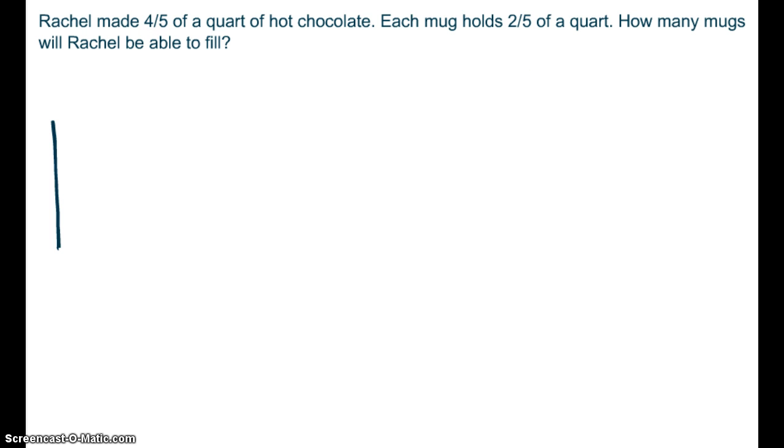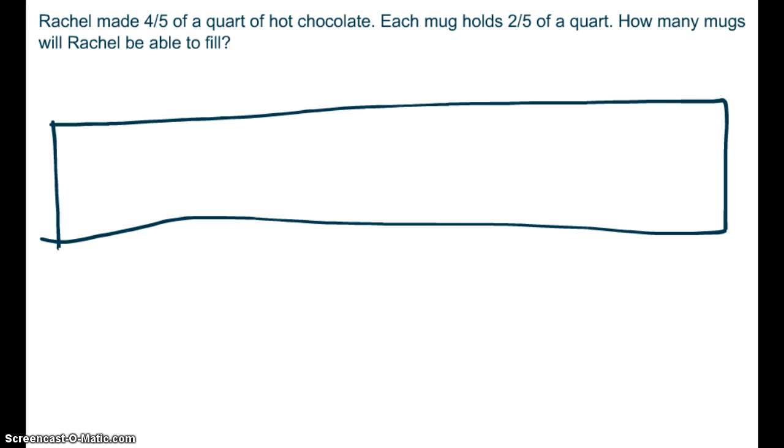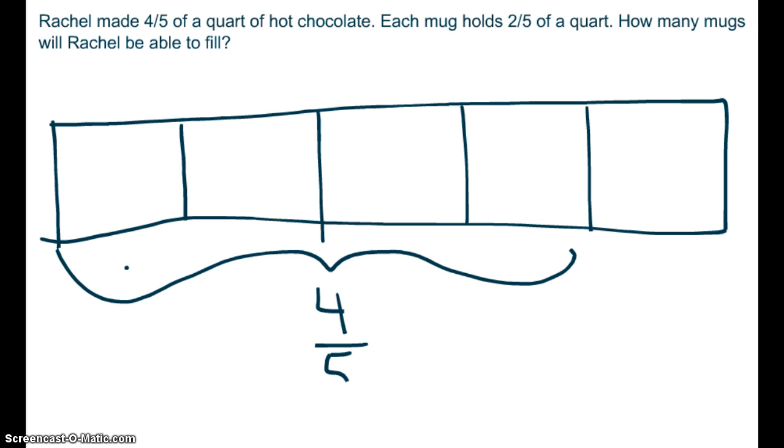OK. In this situation, Rachel made some hot chocolate. And let's say this is one entire quart right here that I just drew. She only filled it 4 fifths of the way. So I'm going to split my whole quart into 5 pieces. So she filled 4 fifths of the quart.